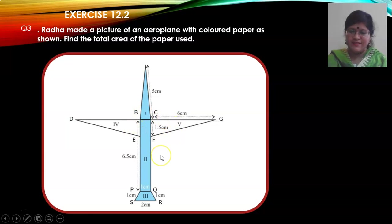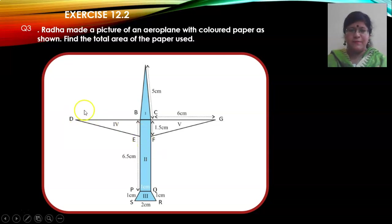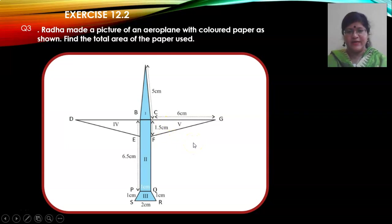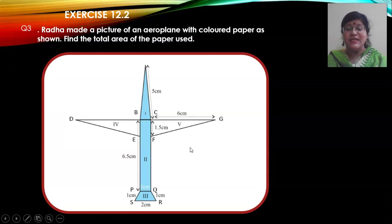What you see in this diagram are five parts of the plane. Part 1 is the nose of the plane. Part 2 is the body of the plane. Part 3 is the tail. You have part 4 and part 5. We have to calculate the area of this entire plane by calculating individually the areas of these parts.